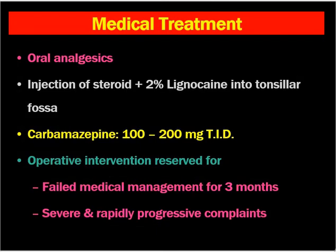After diagnosis, you have to treat the symptoms caused by the elongated styloid process. For medical treatment: oral NSAIDs to decrease pain; injection of steroid plus 2% lignocaine into the tonsillar fossa gives temporary, not permanent, relief. Carbamazepine 100 to 200 mg three times a day is a good treatment choice, but is mostly not given to elderly individuals as it may lead to dizziness or increased sleep. Gabapentin or Pregabalin can also be given. The medicines have to be given for at least 2 to 3 months for good relief.